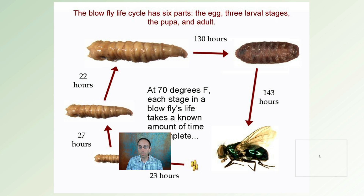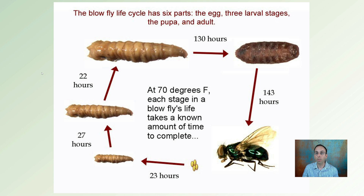Looking at the blowfly in particular, it has six parts: the egg, the three larval stages, the pupa, and the adult stage. This gives you an idea of the progression and how long it takes to move from one stage to another. Keep in mind this is at 70 degrees Fahrenheit. Each blowfly's life cycle takes a known amount of time to complete, and temperature in the area can impact the timing, so it's important to take note of that as well.